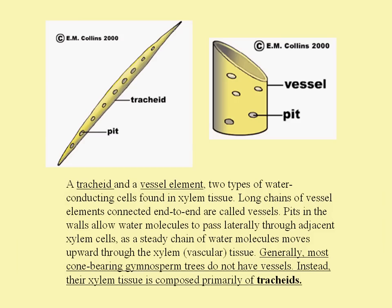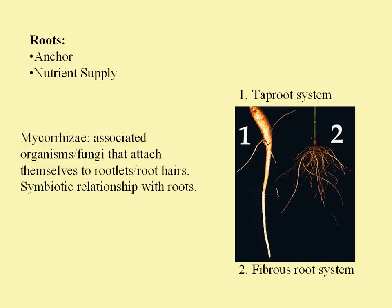Roots are the anchor of the tree. They serve for structural stability and are also responsible for nutrient supply. Often roots are associated with mycorrhizal fungi that actually attach themselves to the root hairs and convert nitrogen into a form that's usable by the tree. It's a symbiotic relationship.